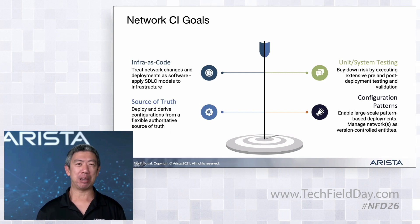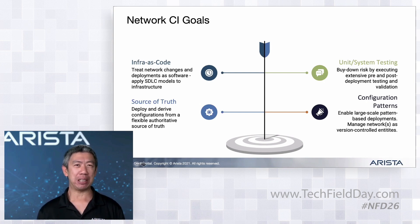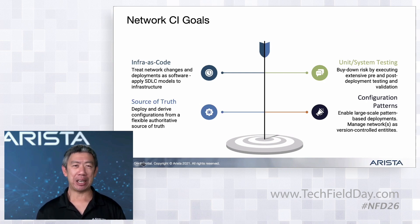Maybe that's GitHub for generated configs, or Nautobot for IPAM — it doesn't have to be one massive all-encompassing database. You could have a source of truth depending on the type of data you're going after. For system testing, how do I introduce repeatable tests? How do I codify what I want to verify on every network change, so that if I make a new change I don't have to guess whether it breaks something fixed earlier?